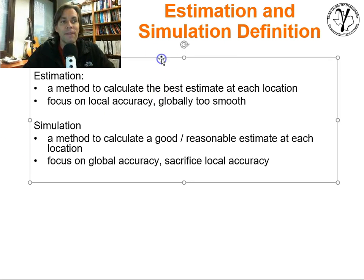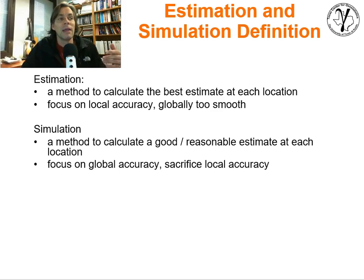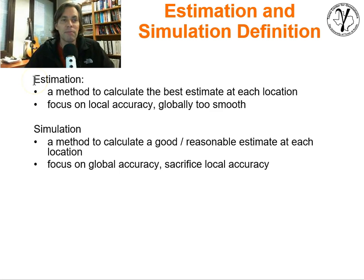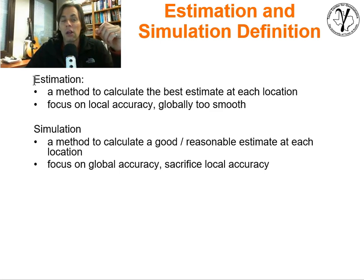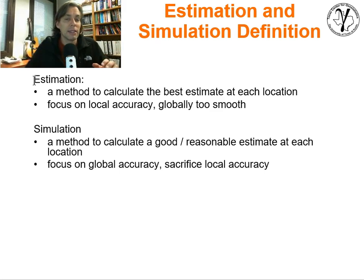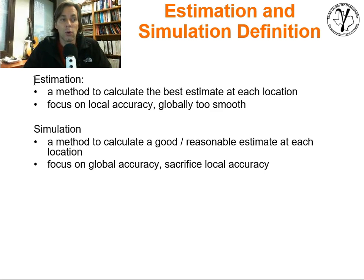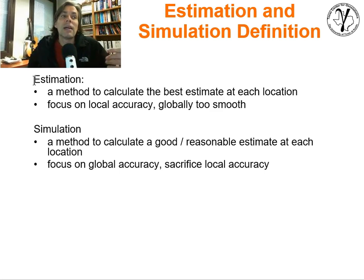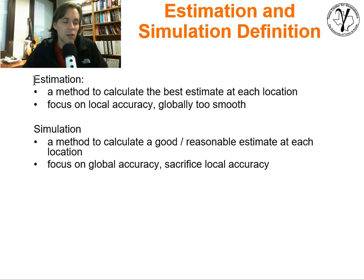So just look at the definitions of estimation and simulation. Estimation: a method to calculate the best estimate at each location — it focuses on local accuracy. Globally it's too smooth, it's not realistic. If you take all of the estimates jointly, it's not right. Simulation: the method to calculate a good, reasonable estimate at each location. You sacrifice local accuracy, but because you focus on global accuracy — having the right distribution and the right variogram — you say it's okay, I just need a reasonable value at each location, but I want to get it right globally.